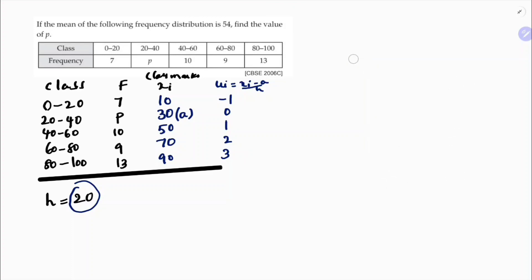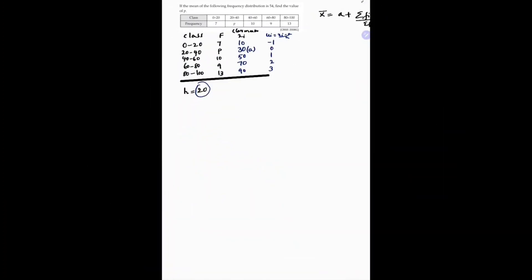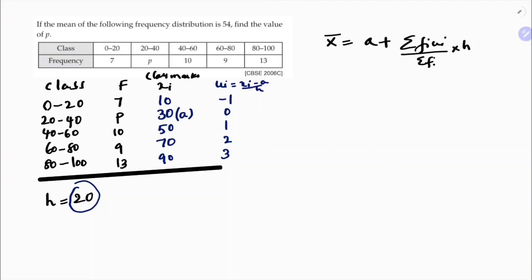Now I will write here formula and I will calculate the missing frequency. Now the formula for step deviation is a plus sigma fi ui by sigma fi into h. So sigma fi here, 7 plus p plus 10. So if you will add the values, 7 plus 10 is 17, 17 plus 9 is 26, 26 plus 13 is 39. So sigma fi here, 39 plus p.